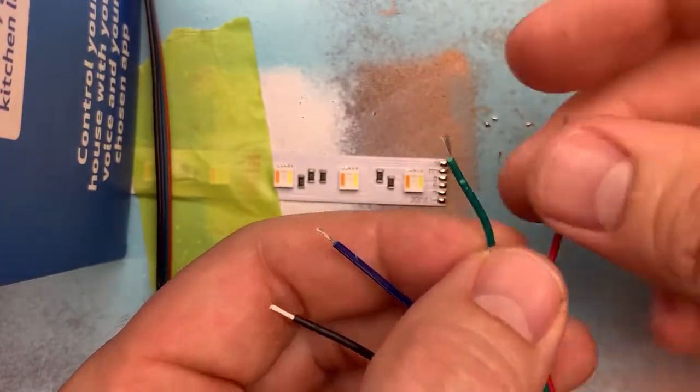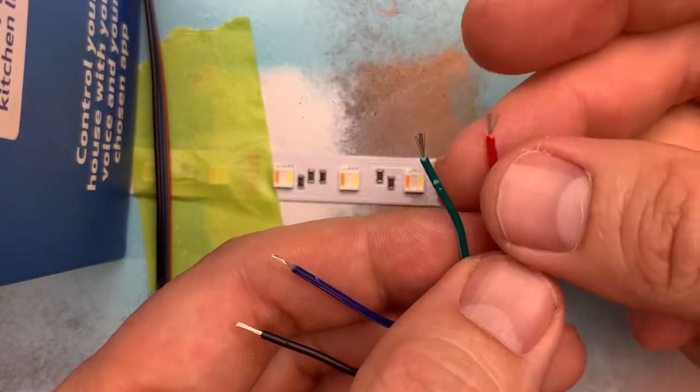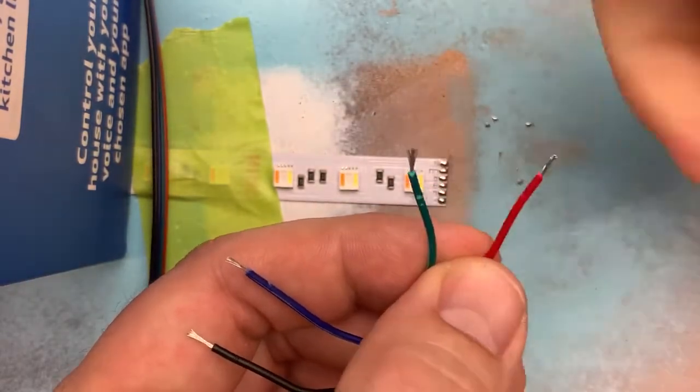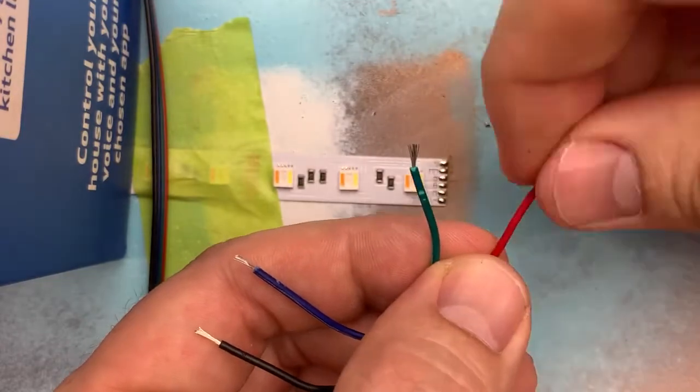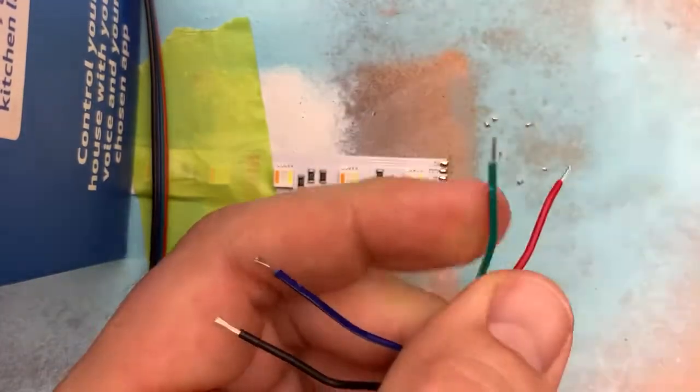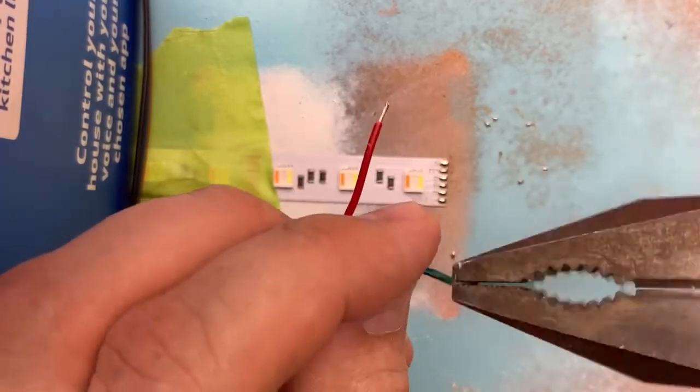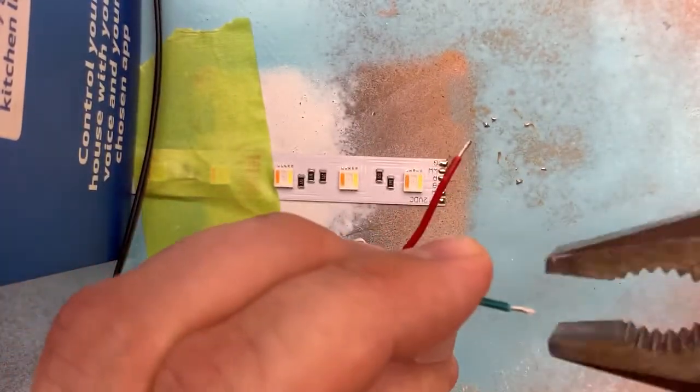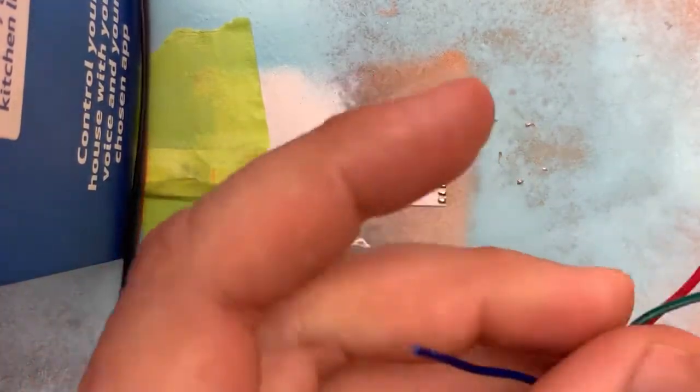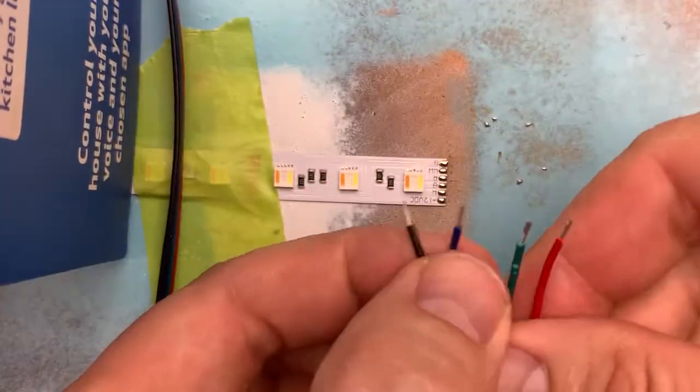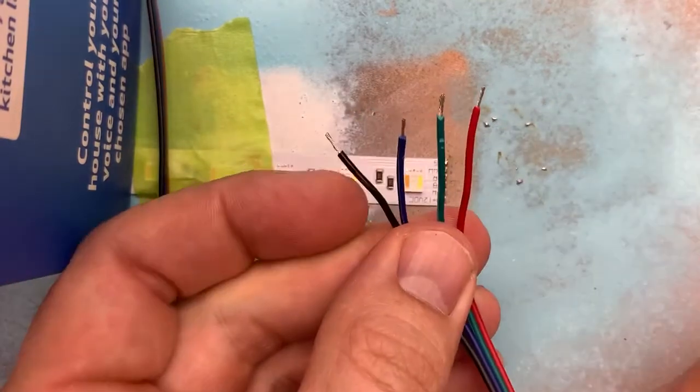I always twist the cable because otherwise you can end up with fraying pieces which can make cross connections. Go ahead and spin all those guys, make sure they're nice and neat. If you really want to, you can get your pliers on there and spin them around, make them super tight.